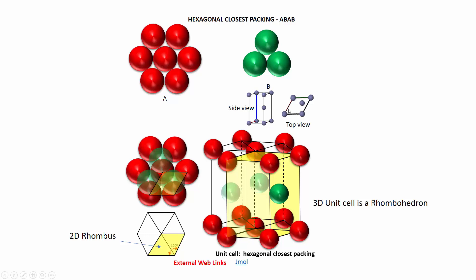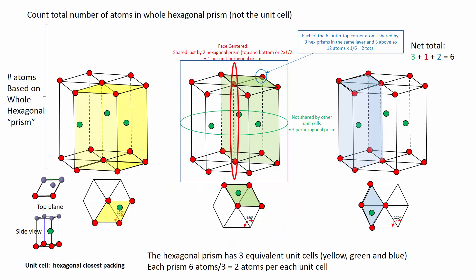How many atoms are in it? It looks like it has eight corners and one on the inside. Let's think about this in two different ways. First, let's look at this whole hexagonal prism and notice that it consists of really three unit cells — all rhombohedra, one outlined in yellow, one in green, one in blue. If we calculate the total number of atoms in the hexagonal prism and divide by three, we'll know how many belong to each single unit cell.